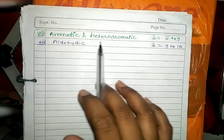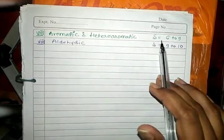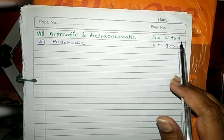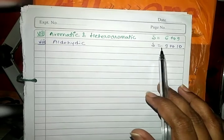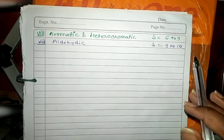For aromatic and heteroaromatic compounds we get delta value 6 to 9 parts per million. For aldehyde we get delta value 9 to 10 parts per million.